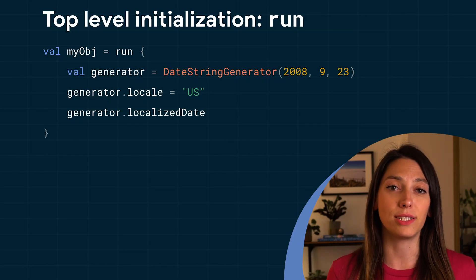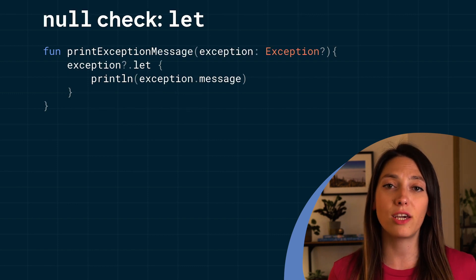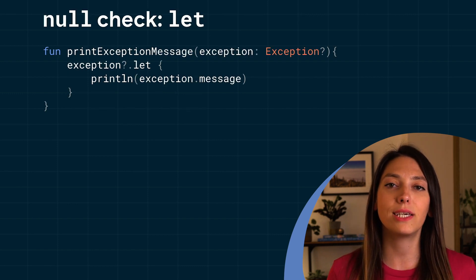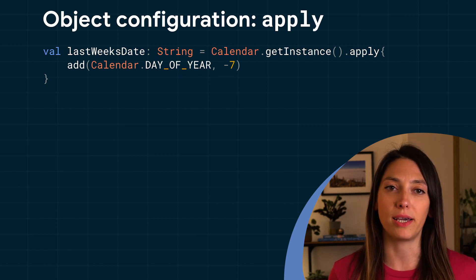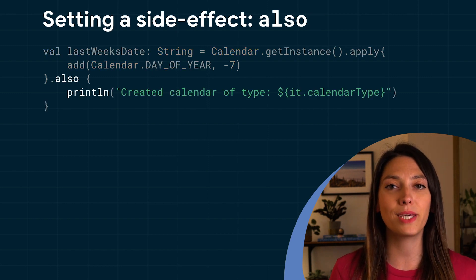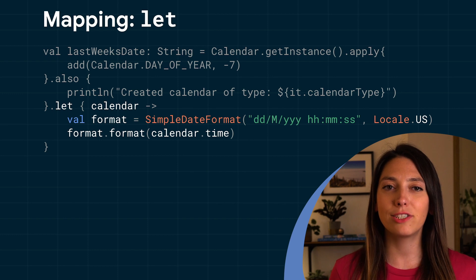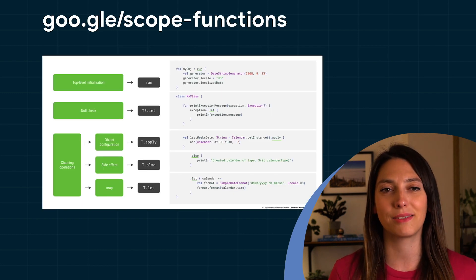For top-level initialization, use run. For null check, use let. If you're chaining operations, here's what you can use depending on what operation you do: for object configuration, use apply; for setting a side effect, use also; if you want to map something, use let. Here's a handy cheat sheet to help you remember all of this.